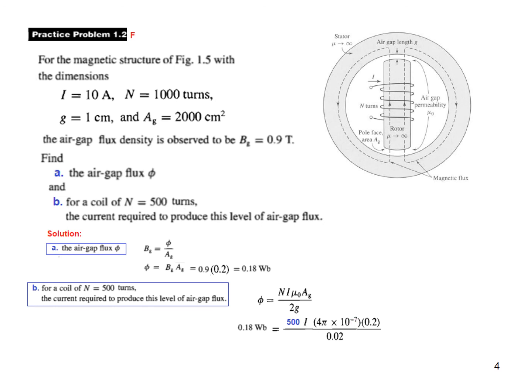And 2g is 0.02, or 2 times 0.01, that is the air gap. And from here we can calculate I by manipulating, so this multiplies and these terms, and 500 divide, and by calculation we find it to be 28.64 ampere.